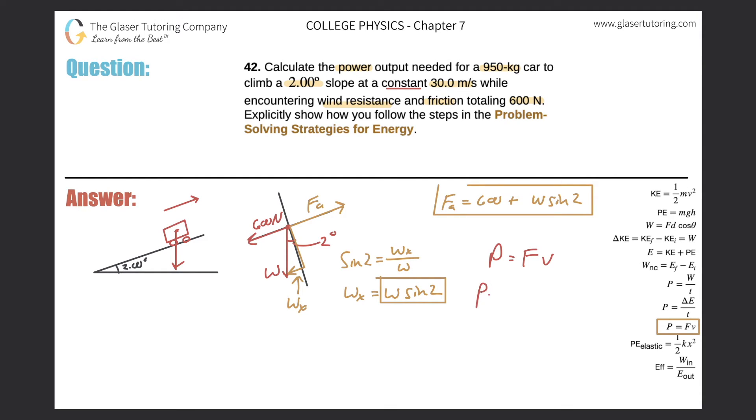So I just found the force. That was 600 plus the weight, which is really mg sine of two, all multiplied by the velocity. And it said that the velocity is moving at, or the vehicle is moving at 30 meters per second. So this is times 30.